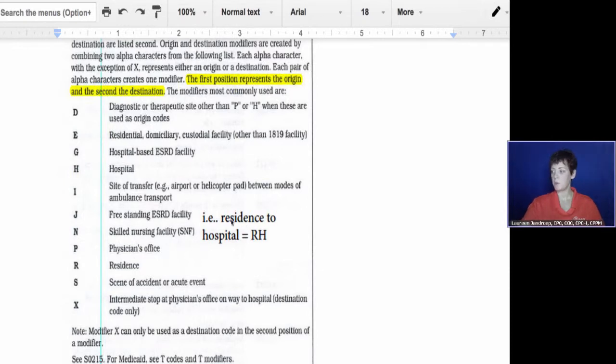So for example, if you were picking up a patient at their residence, their home, and the ambulance driver was taking them to the hospital, you would actually use the modifier on the ambulance code RH to indicate where you picked them up and where you dropped them off. Okay, I know I'm making it sound like a bus, but you get the idea.